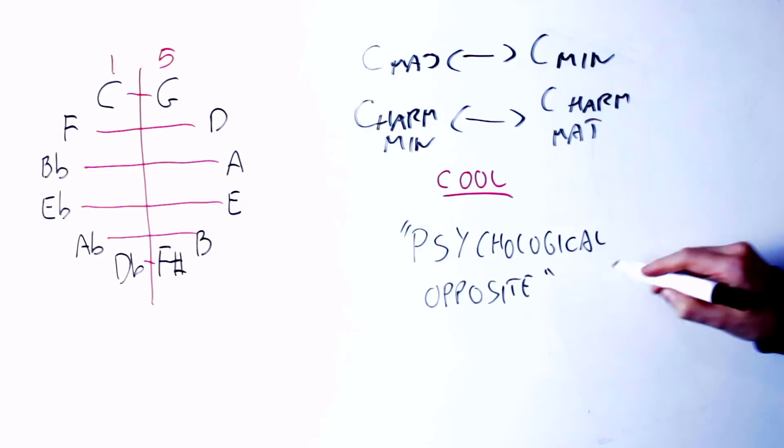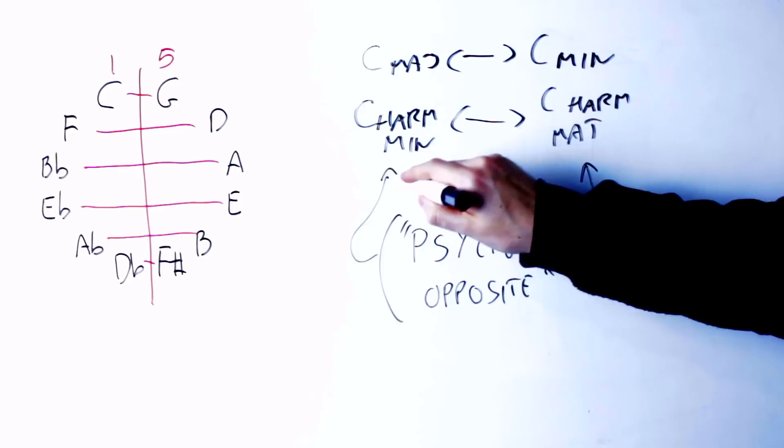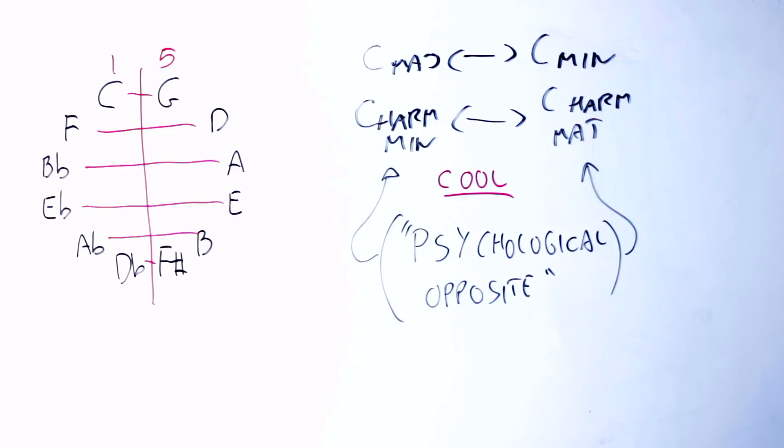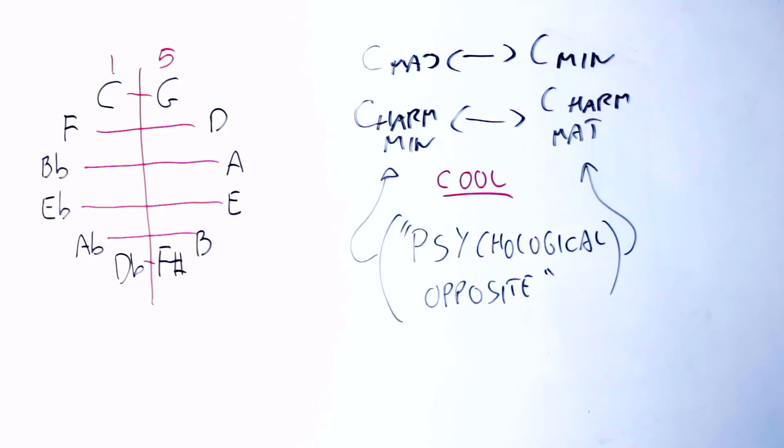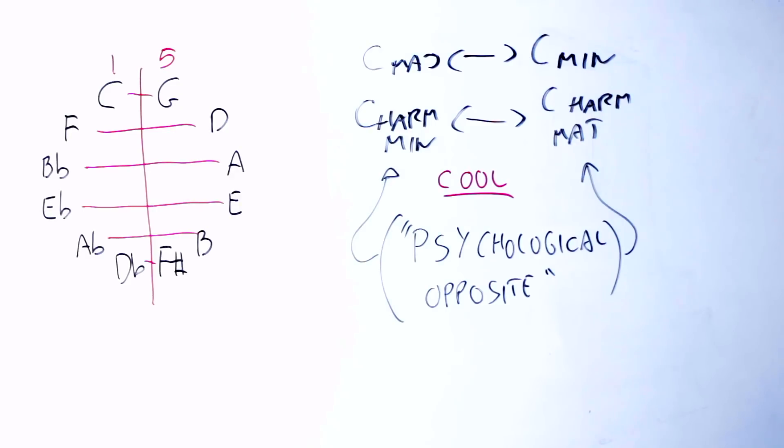And inverting a scale in negative harmony is supposed, at least in theory, to give us the psychological opposite of the original, that is, to give us the complementary scale of the original. If the first scale sounds happy, the second one should definitely sound not happy. So it's interesting because the C natural major scale becomes the C natural minor scale under negative harmony, and the C harmonic minor scale becomes the C harmonic major scale under negative harmony, and vice versa, and all this is very nice and tidy.